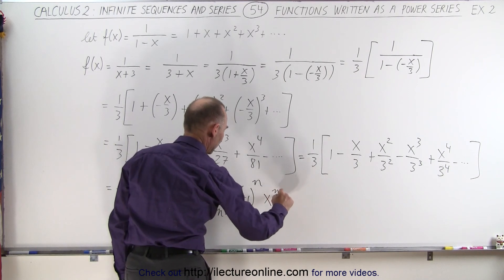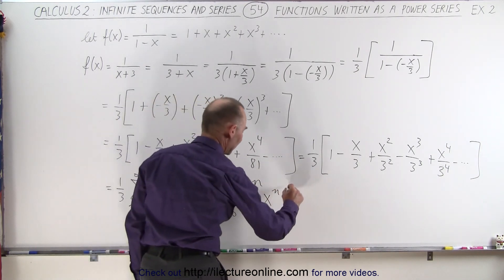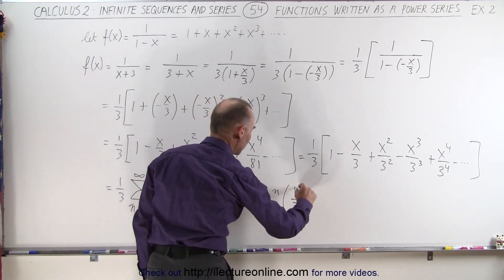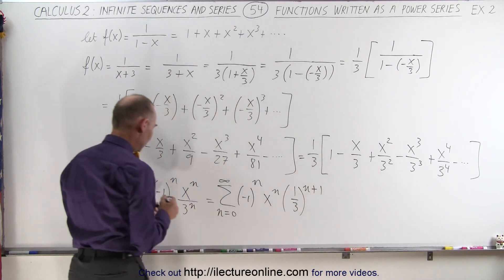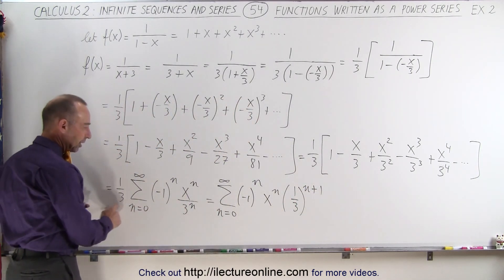times x to the n power, times 1 over 3 to the n plus 1 power, because we have an additional 1 third in there.